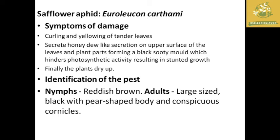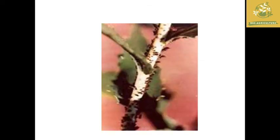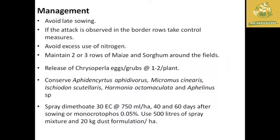This results in stunted growth of the plant, and finally the growing parts dry up and the whole plant may die — this is the major problem caused by safflower aphid. For identification, the nymph is reddish brown, and the adult is large, black with a pear-shaped body, and cornicles are present in the adult.